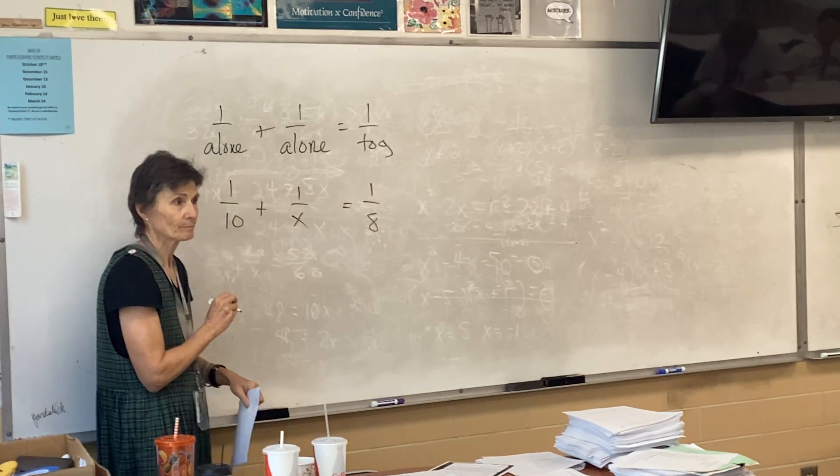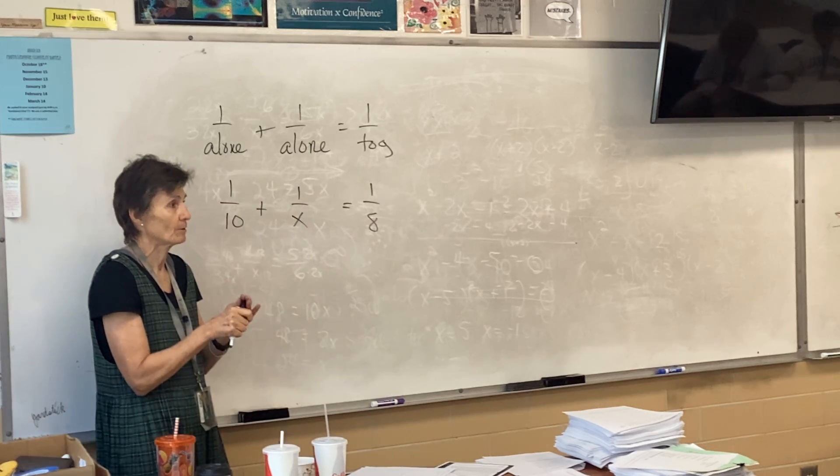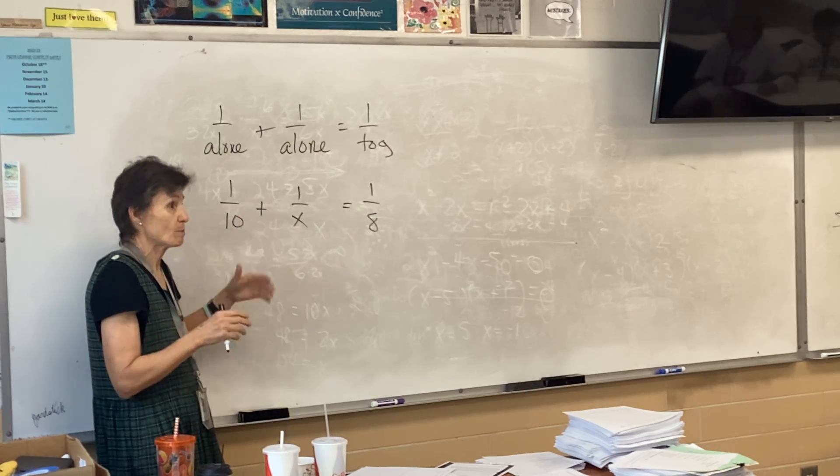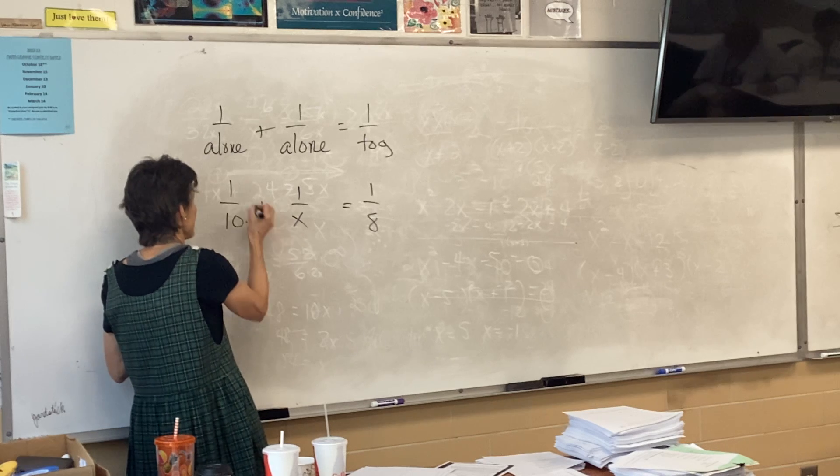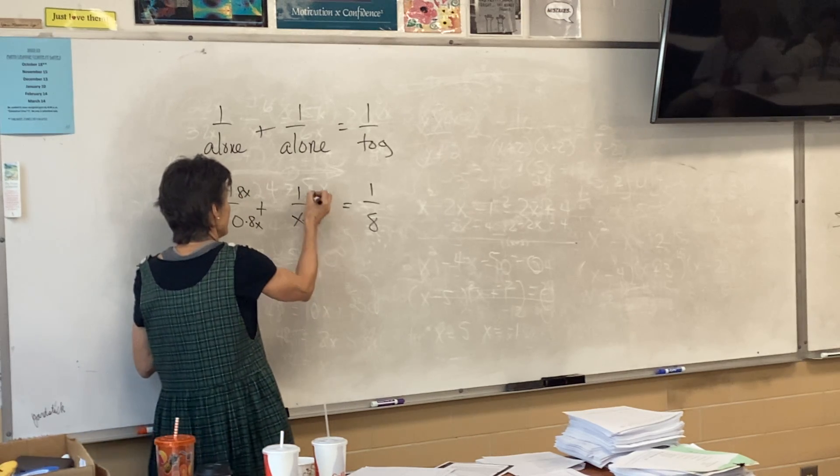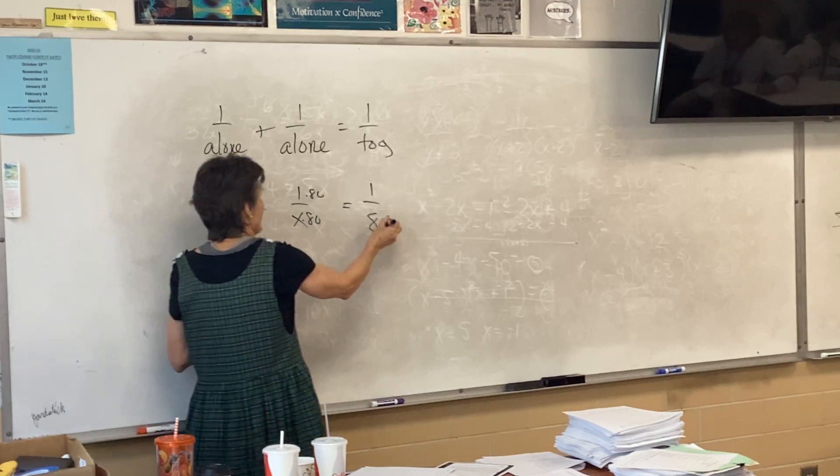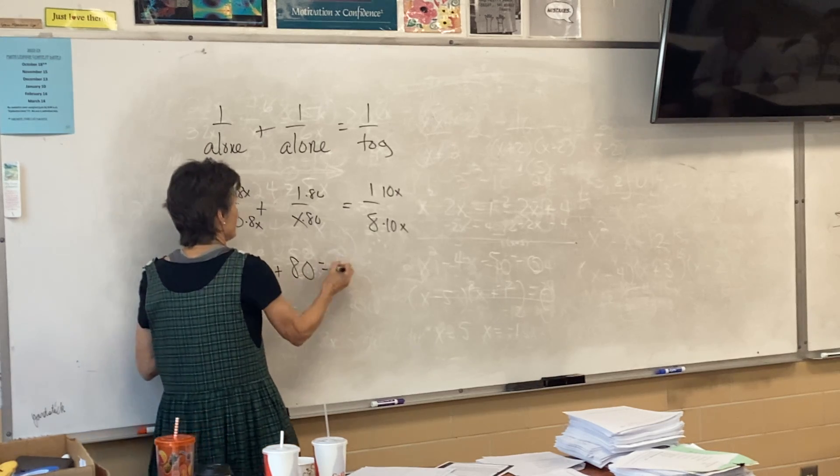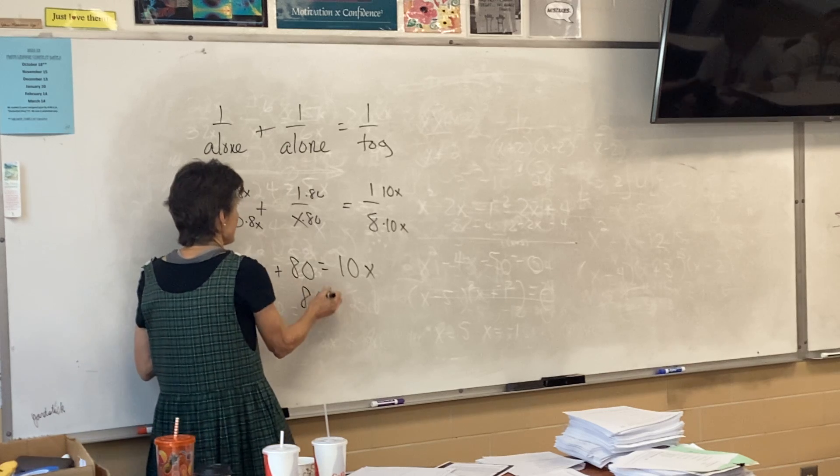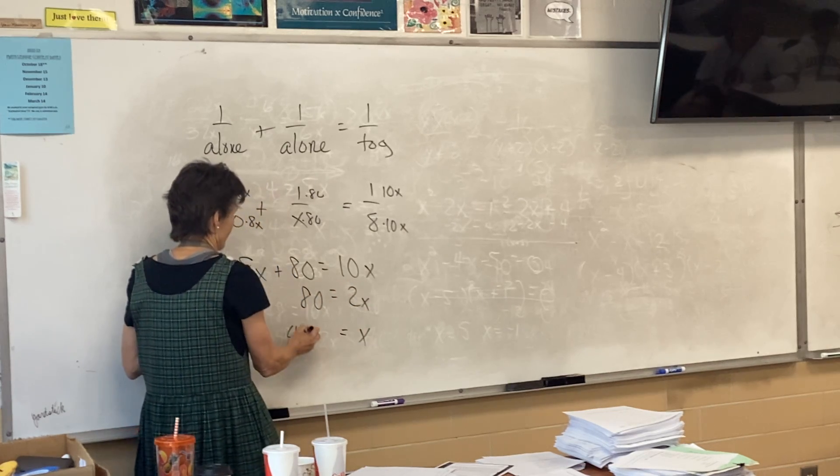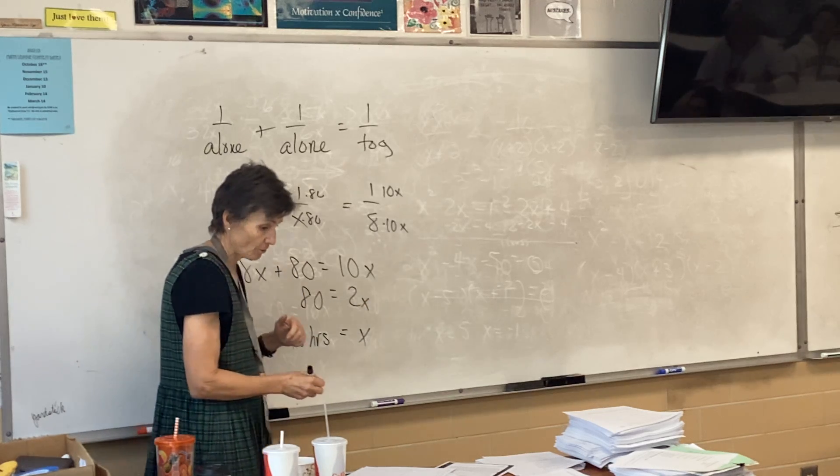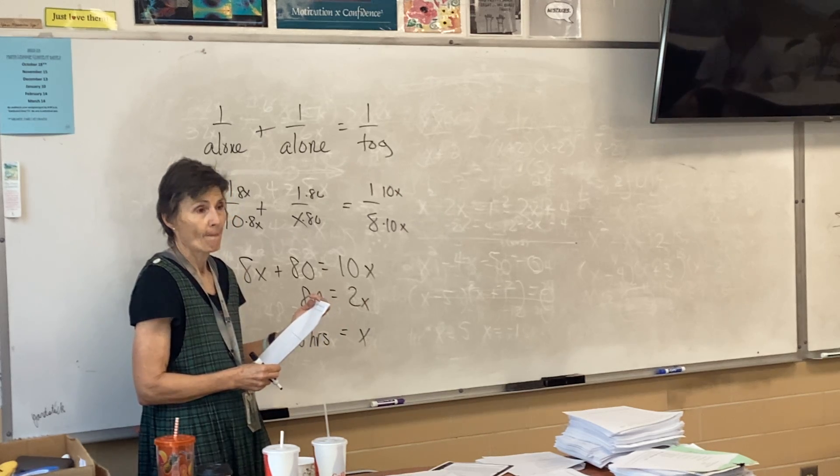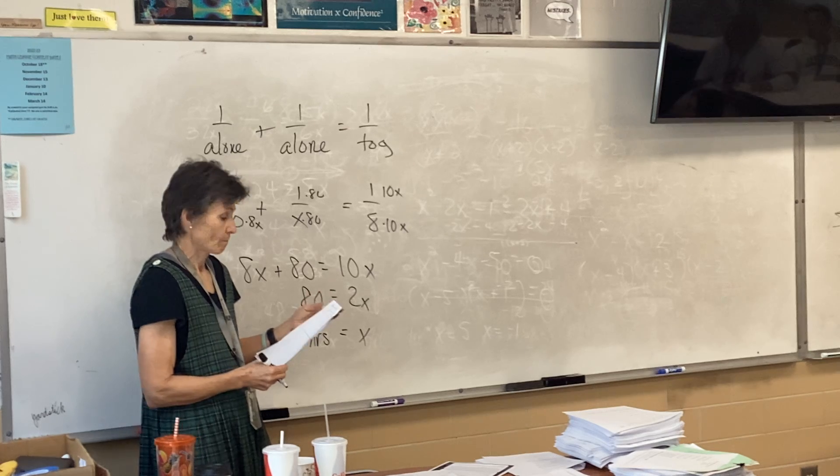Mora alone is x. We can use 80x as a common denominator. So 8x plus 80 equals 10x. That gives us 80 equals 2x, and x equals 40. Forty hours to do the project.